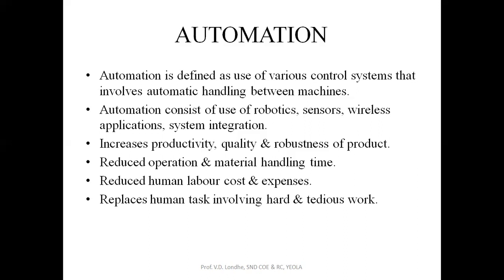The drawback of the automation system is that it requires a high initial cost — investment will be high. The development and research cost of automation will also be unpredictable. We can't predict the cost required for development and research. Automation can also lead to unemployment, as it replaces human labor with machines. Additionally, an automated system may have security threats, both online and offline.